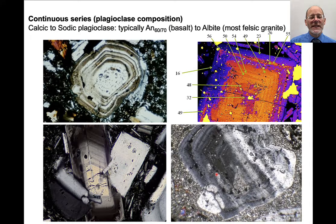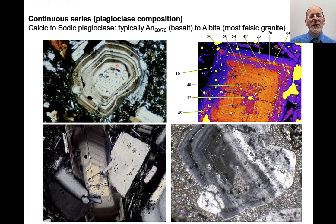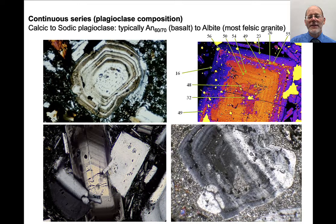Here are some examples of the continuous series in terms of plagioclase composition. These are crystals broadly zoned from a more calcic plagioclase in the early-formed crystal core to more sodic plagioclase at the crystal rim. Here is a strongly zoned plagioclase crystal showing oscillations — the plagioclase composition doesn't shift uniformly toward a more albitic composition; it goes up and down a little. Looking at one example, in the core of the plagioclase the anorthite content is about 50%, and going out toward the rim, those anorthite contents get lower and lower, down to AN16 at the rim.